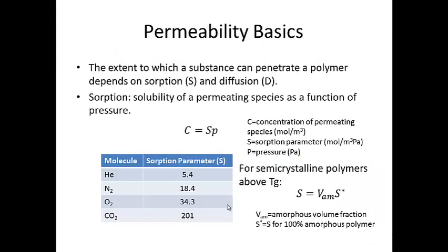The extent to which a substance can penetrate a polymer depends on the sorption S and the diffusion D, and we convert these into a parameter called permeability. Sorption is the process by which molecules adsorb onto the surface of the material, and can be thought of as the solubility of a permeating species as a function of pressure. The concentration of the diffusing species at the polymer surface equals the sorption parameter S times pressure p. Concentration is measured in moles per cubic meter, and S is measured in moles per cubic meter per pascal. The sorption parameter varies greatly — for helium it is very low at 5.4 moles per cubic meter, while for CO2 it is as high as 201, about 40 times higher.